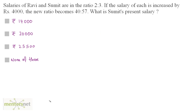Salaries of Ravi and Sumit are in the ratio of 2 is to 3. If the salary of each is increased by Rs 4000, the new ratio becomes 40 is to 57. What is Sumit's present salary?